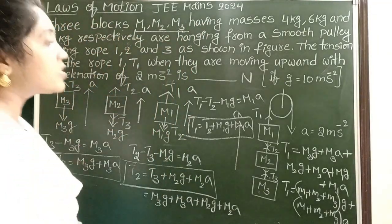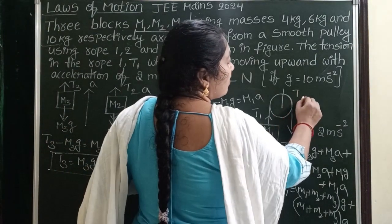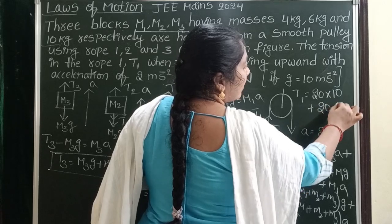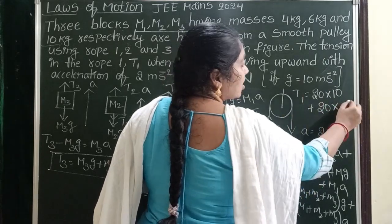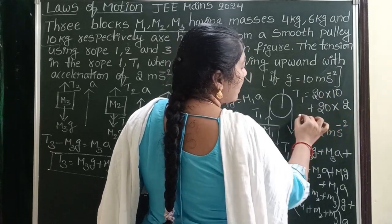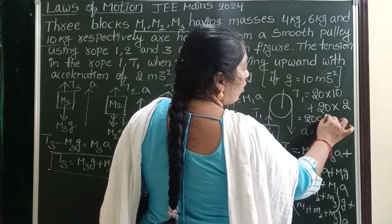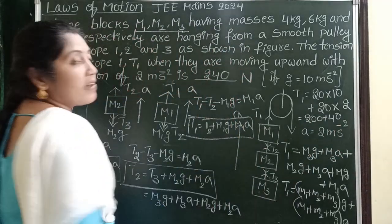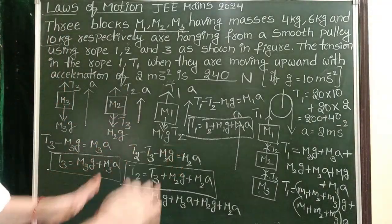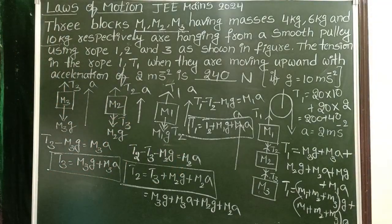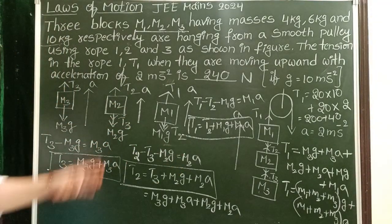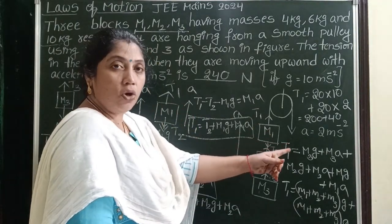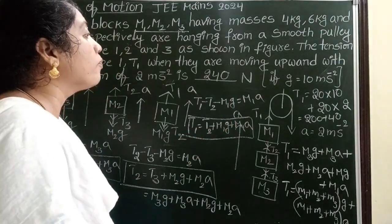Given masses are 4 kg, 6 kg, and 10 kg. Their sum is 4 + 6 + 10 = 20 kg. T1 = 20 × g + 20 × a = 20 × 10 + 20 × 2 = 200 + 40 = 240 N. When you know the formula, the answer is very easy. The sum of the masses times gravitational acceleration plus the sum of the masses times the upward acceleration gives T1 = 240 N.